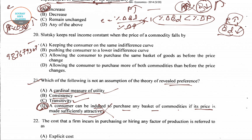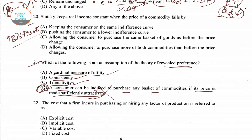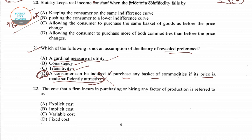Question number 22: The cost that a firm incurs in purchasing or hiring any factor of production is considered as explicit cost. So the right answer for question number 22 is option A, that is explicit cost.